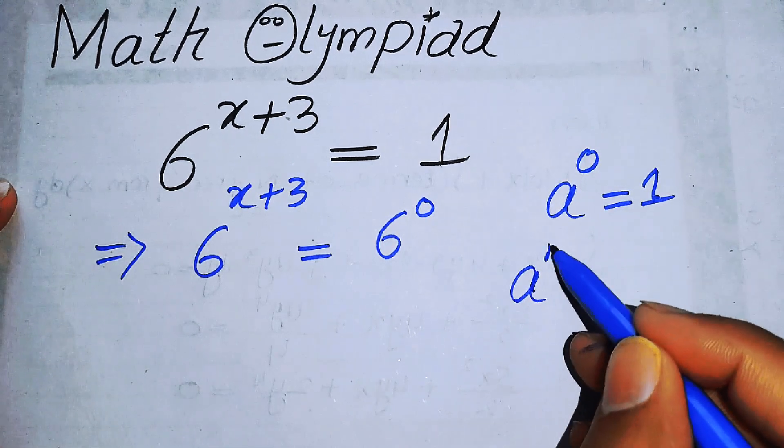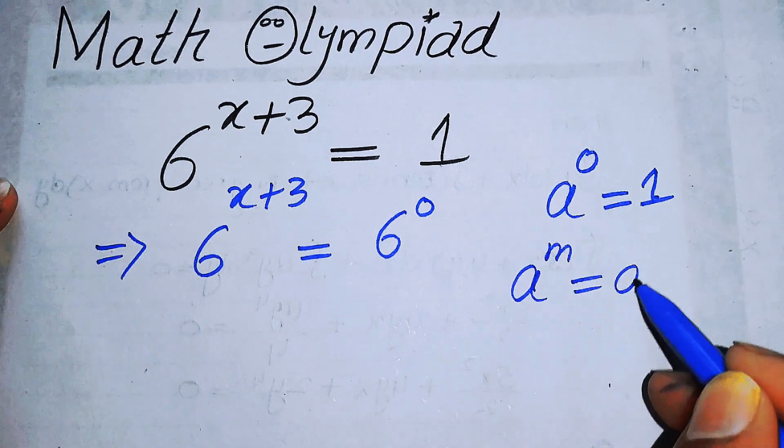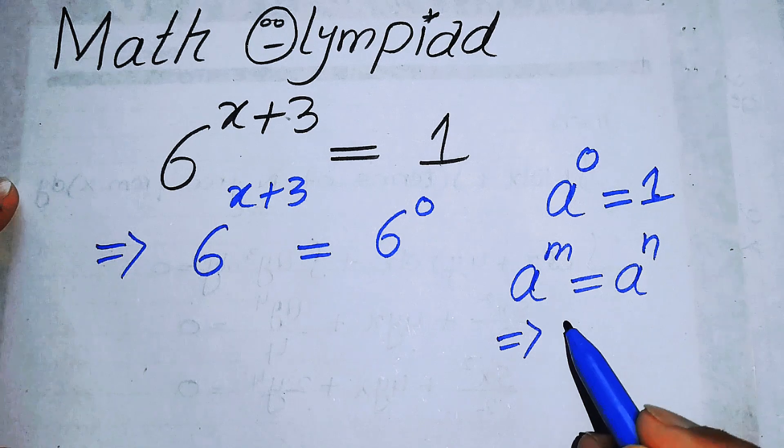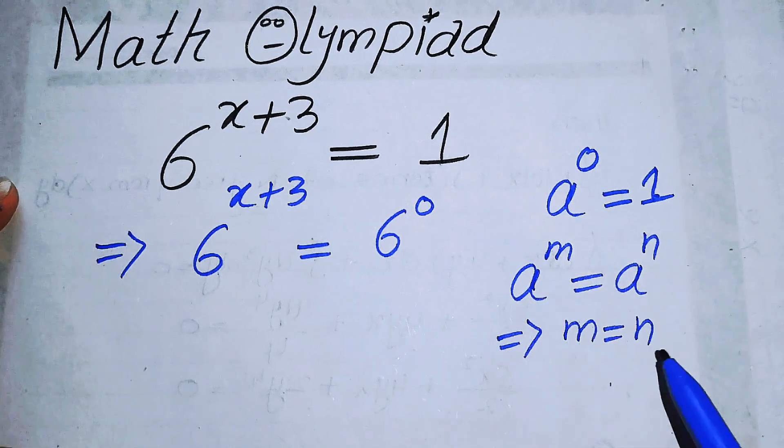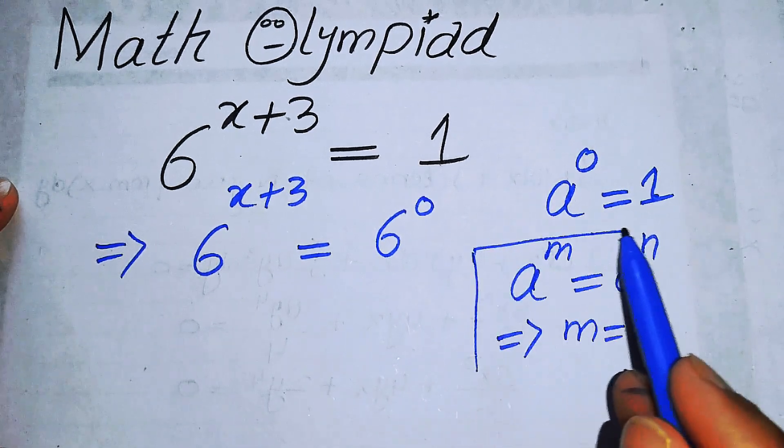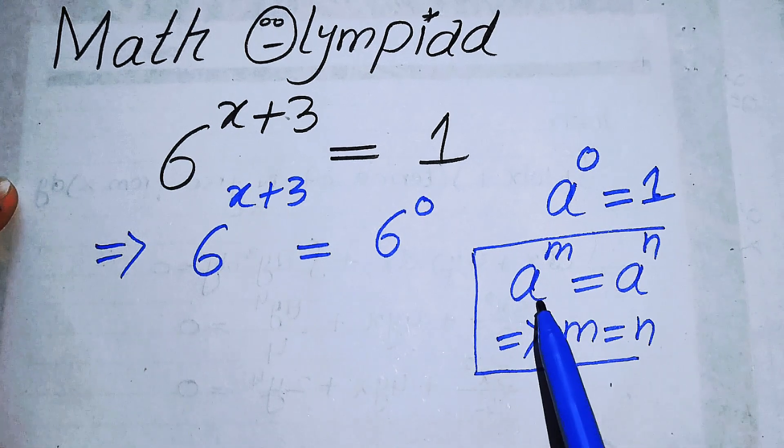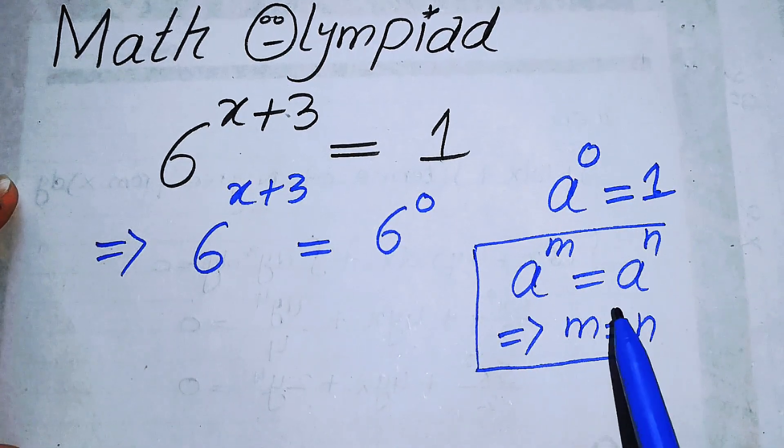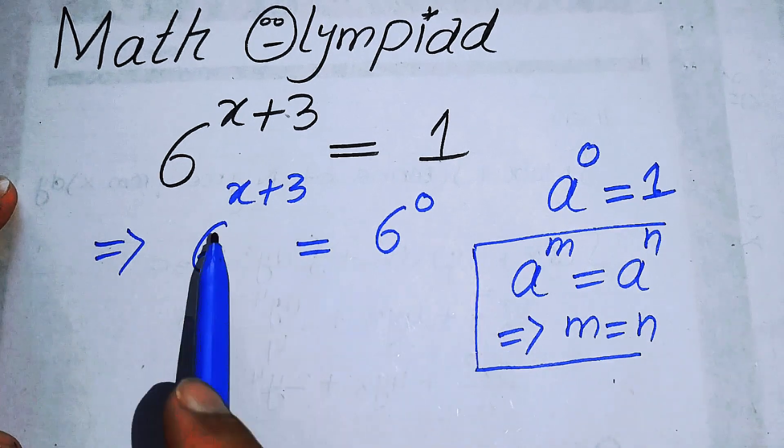You know that if we have a to the power of m equals a to the power of n, then m equals n. So if bases on both sides are the same, then their powers are equal. And similarly here you see that...